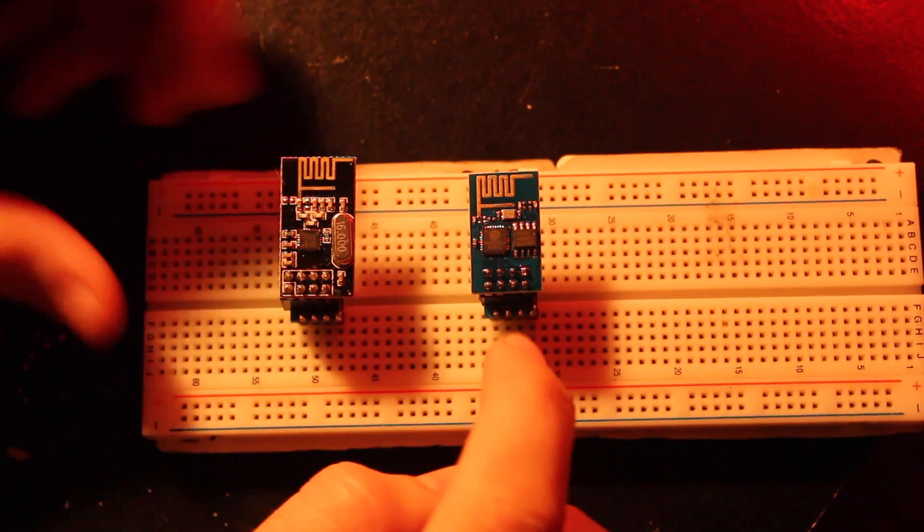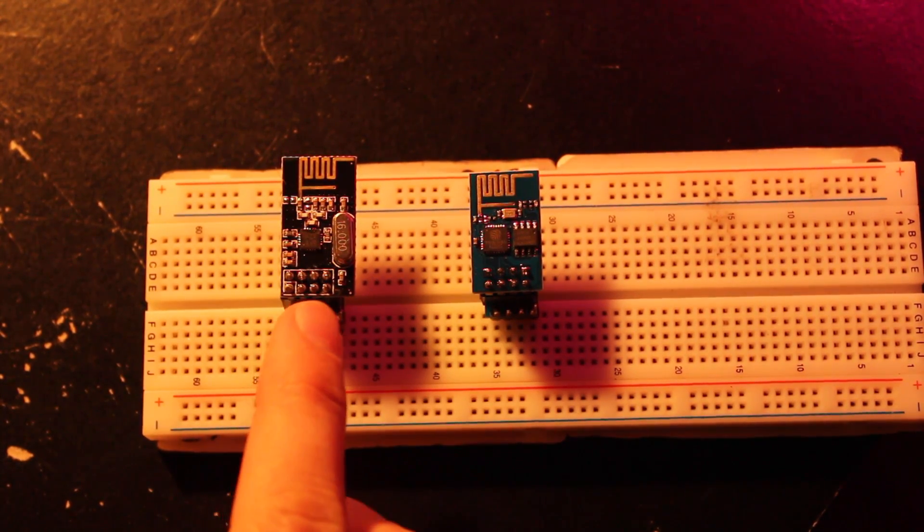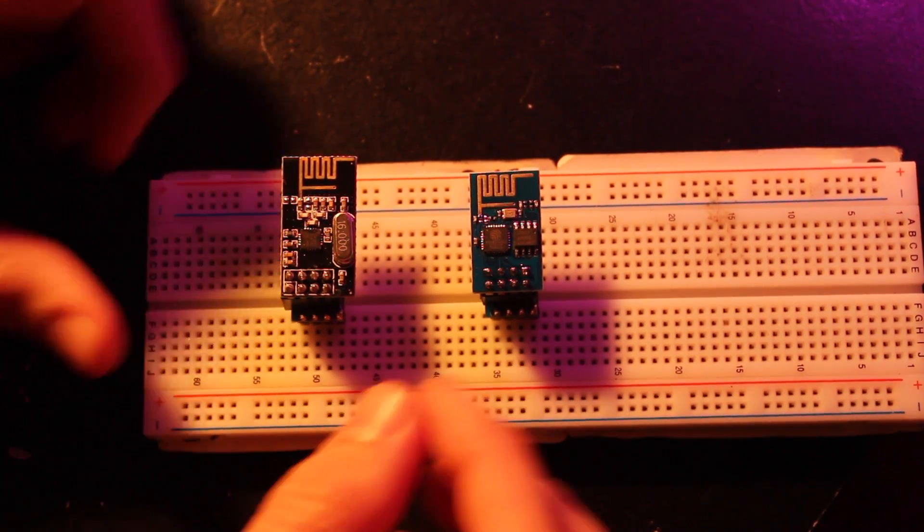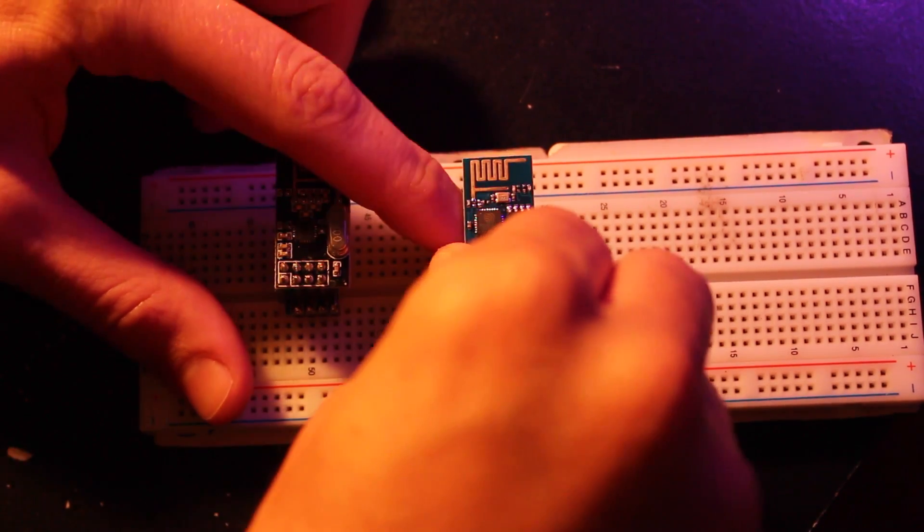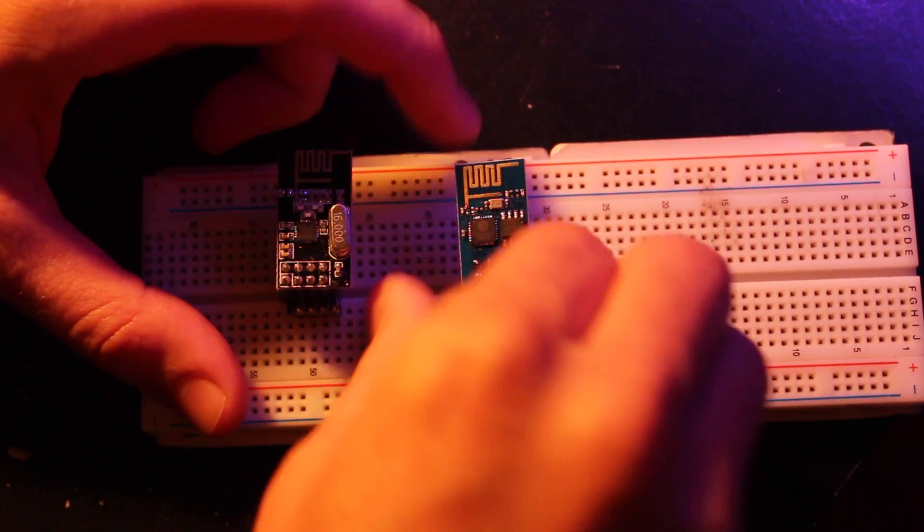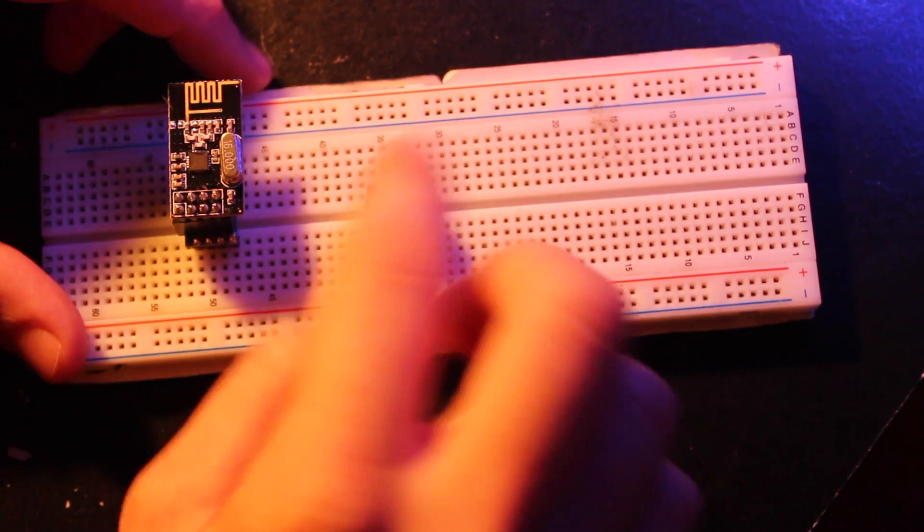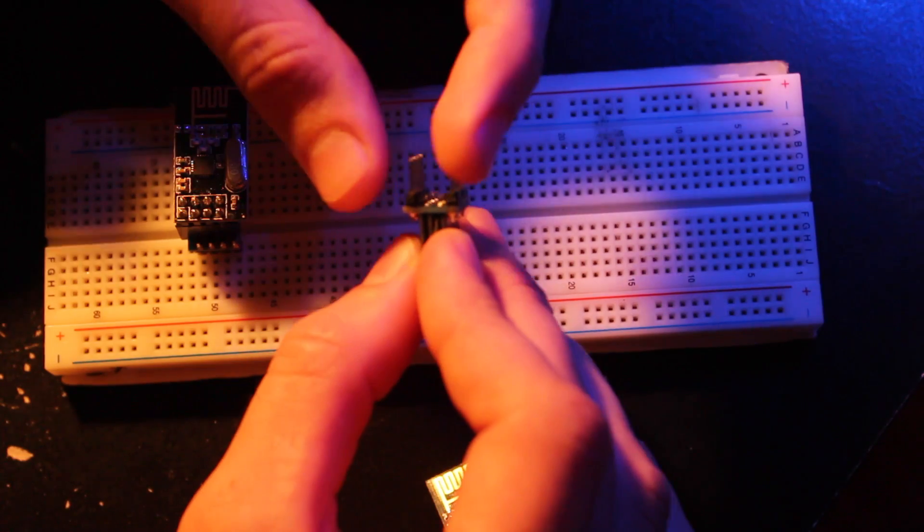So here is the ESP8266 and here is the NRF24L01+. Both of these modules have the same 8-pin header, so they both work with the adapter. Basically how it works is the module plugs into the adapter, and this is just a simple board. It does nothing but spread the two rows apart so that they're breadboard friendly.